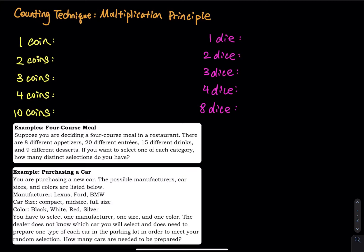Let's say you flip one coin. How many outcomes do you have in the sample space? It's either a head or a tail. So if you flip one coin, it's either a head or a tail, so there are two outcomes in the sample space.